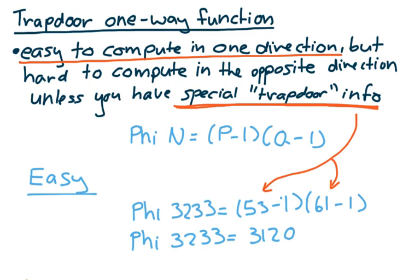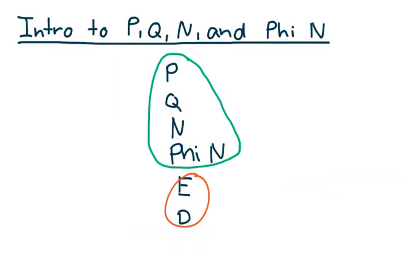This is part of what makes RSA encryption so incredibly secure — it's easy for whoever's creating the key, but hard for anyone in the general public without that special trapdoor information. A hacker wanting to find phi(N) would have long been dead by the time their computer factored N, given that N is large enough. Knowing phi(N) is crucial to decrypt messages, which we'll explore in the next video, along with E and D and the second utilization of a trapdoor one-way function in RSA.